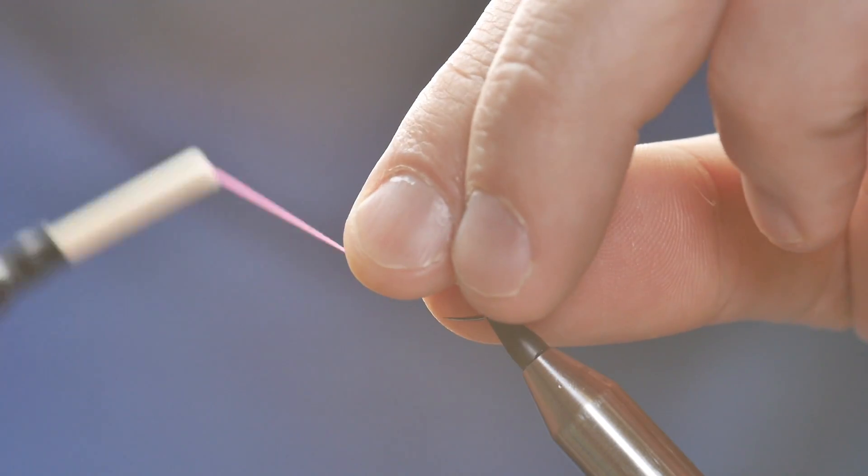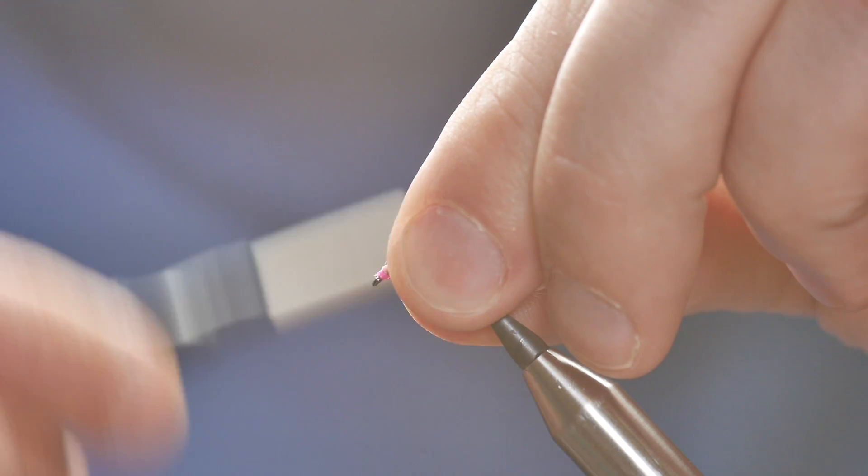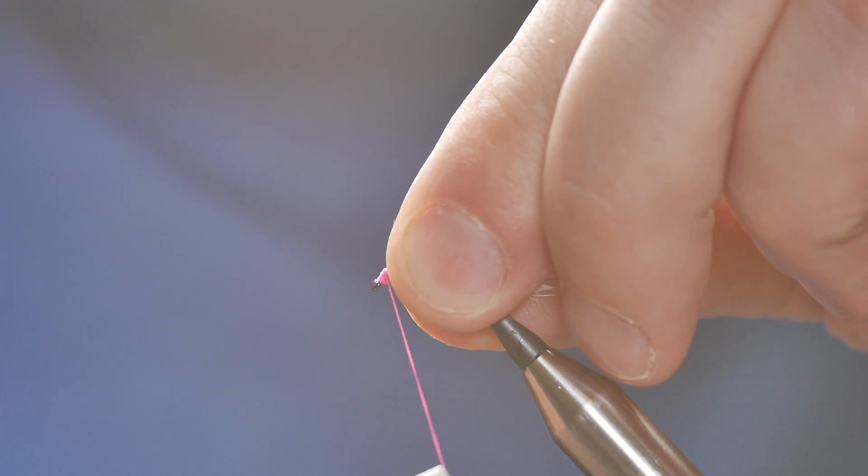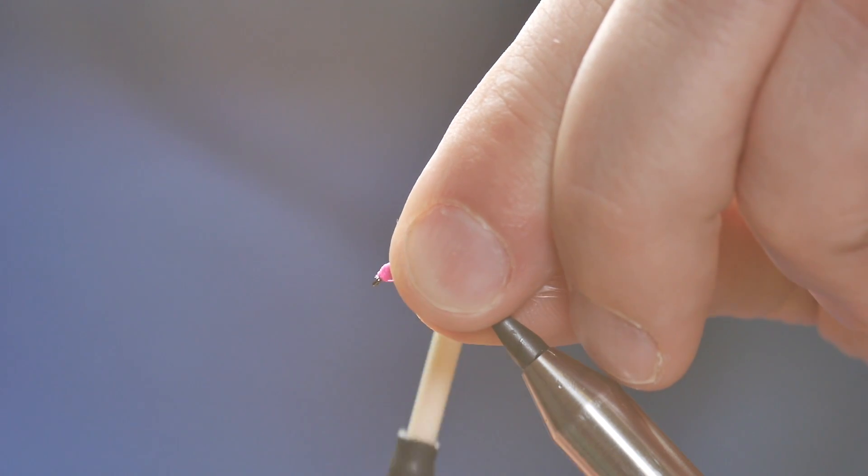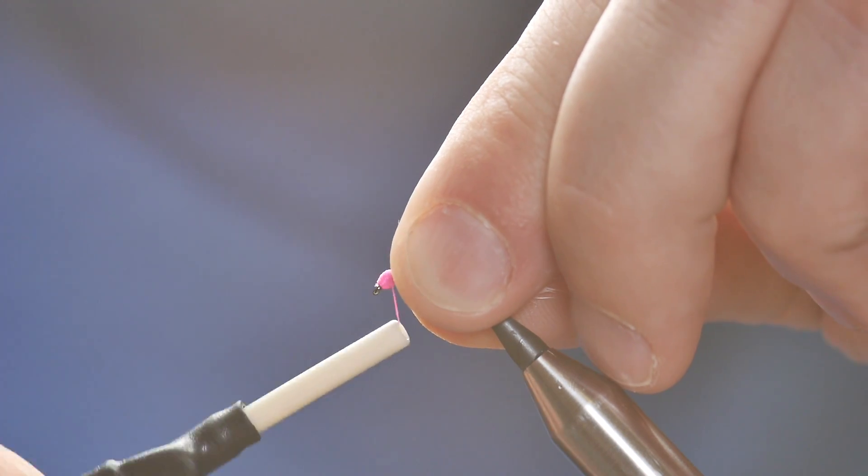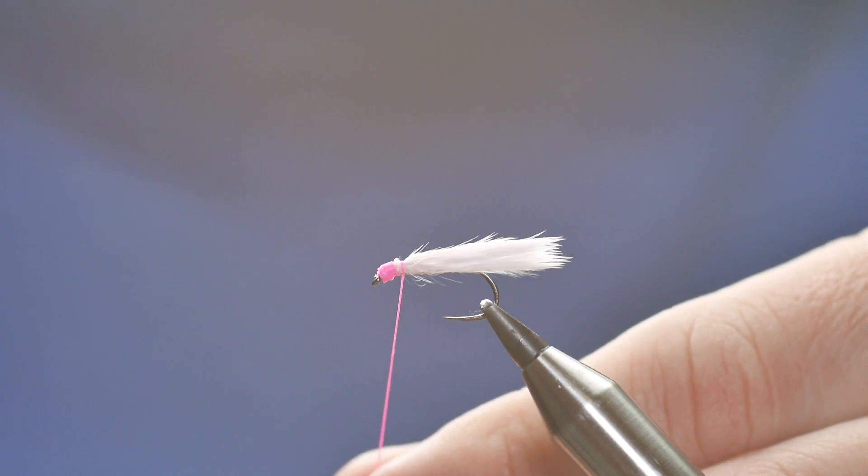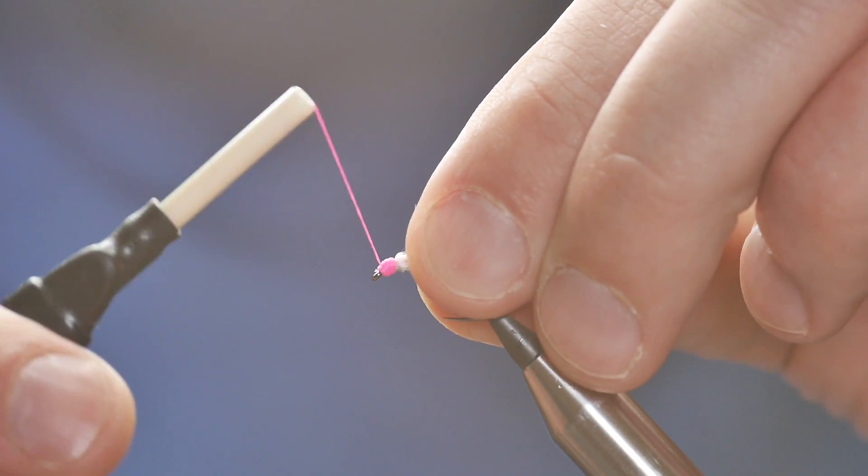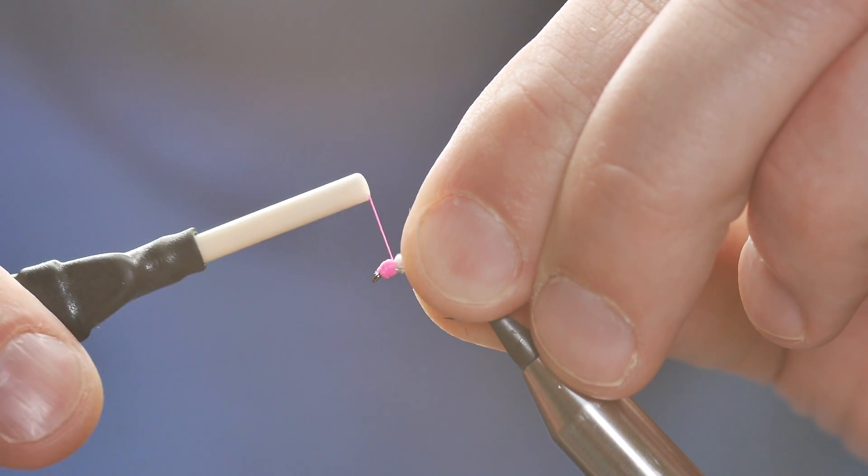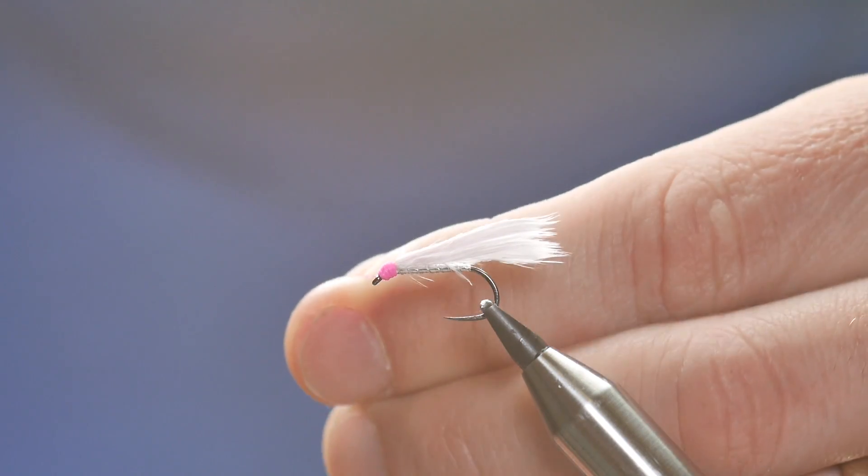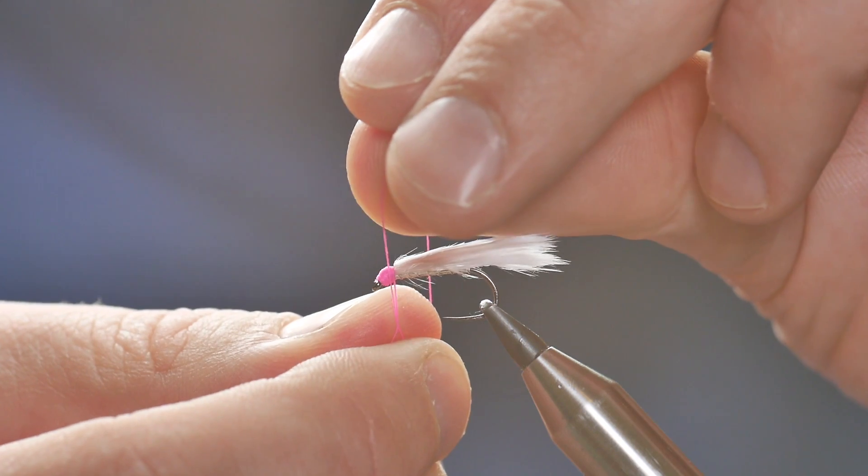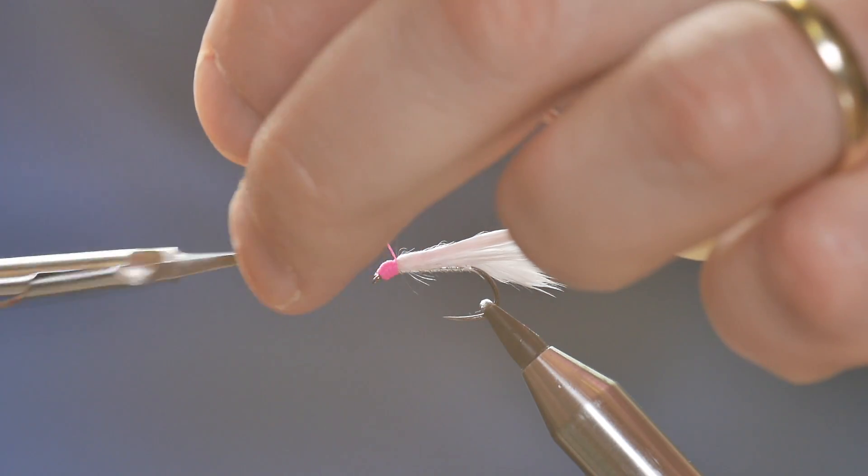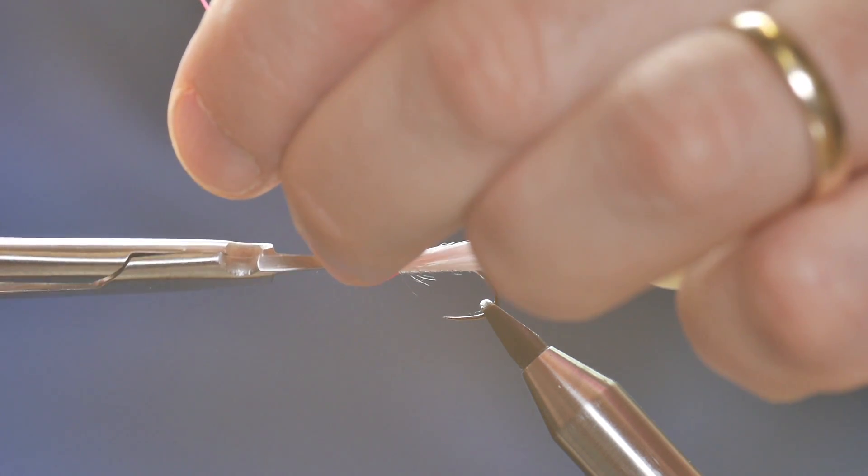And then what I can do with this is start building a nice head. And then once I've got the size I want, I can simply, oh I don't know what happened there, I'm just going to come back and go over it again. It just slipped but I've got it now. So if you've got a whip finish tool, now's the time. If you do as I do, just put a half hitch in.